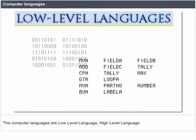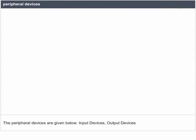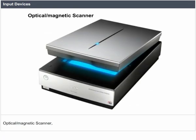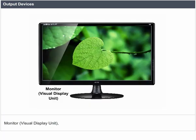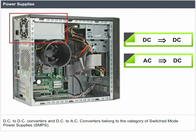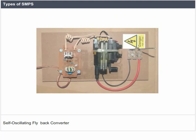Computer languages are low-level language and high-level language. The peripheral devices include input devices and output devices. Input devices include keyboard, mouse, optical and magnetic scanner, touchscreen, and microphone for voice input. Output devices include monitor, visual display unit, printer, and speakers. Power supplies include DC to DC converters and DC to AC converters, which belong to the category of Switch Mode Power Supplies (SMPS). Types of SMPS include DC to DC converter, forward converter, flyback converter, and self-oscillating flyback converter.